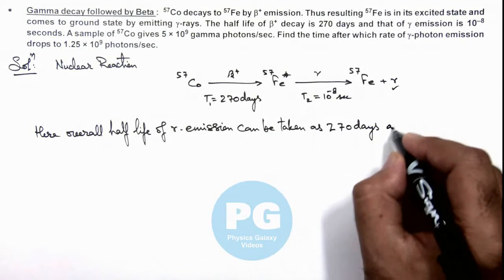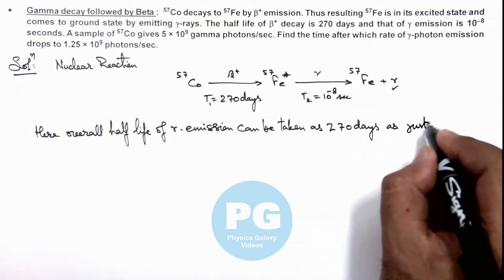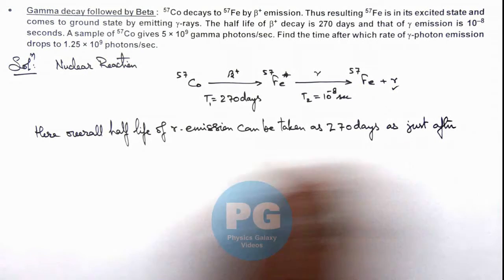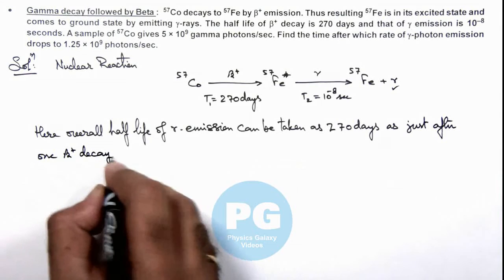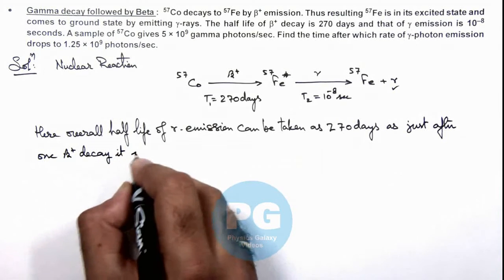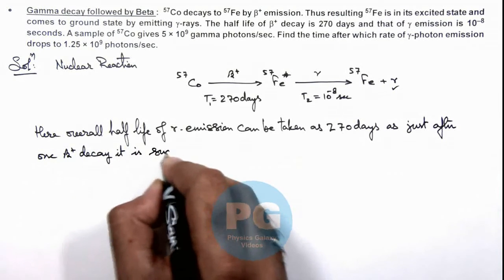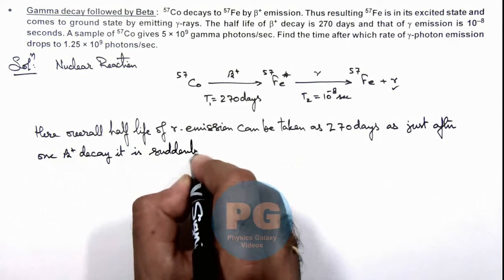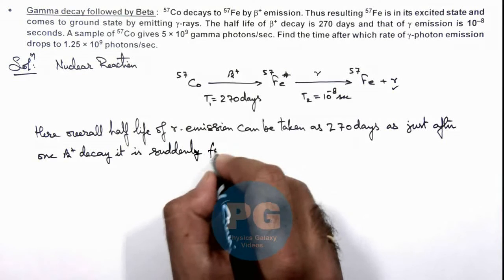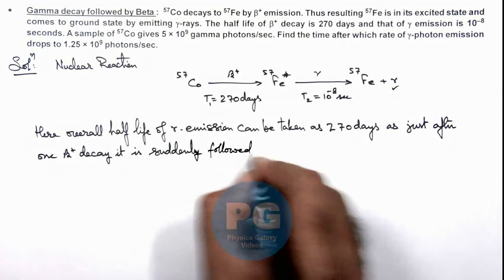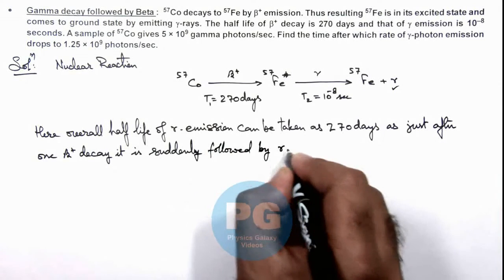We can also write: just after one beta plus decay, it is suddenly or almost instantaneously followed by gamma emission.